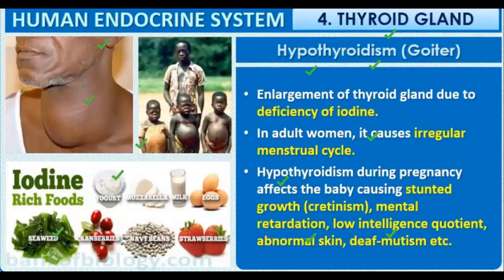The diseases related to improper functioning of the thyroid gland include hypothyroidism, also known as goiter. In goiter, there is an enlargement of the thyroid gland due to a deficiency of iodine, which affects the hormones produced by the thyroid gland.